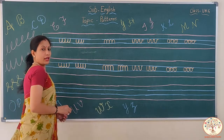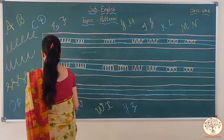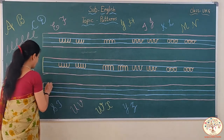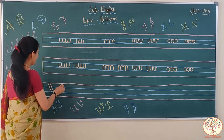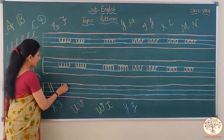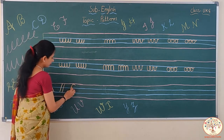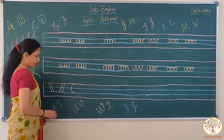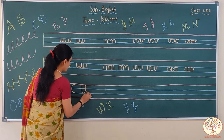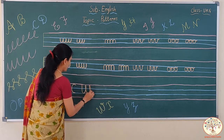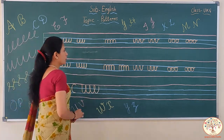Now we will revise the patterns that we learned in our last video. They were: slanting line left side, slanting line right side, curve, and U and loop, U and loop, U and loop.